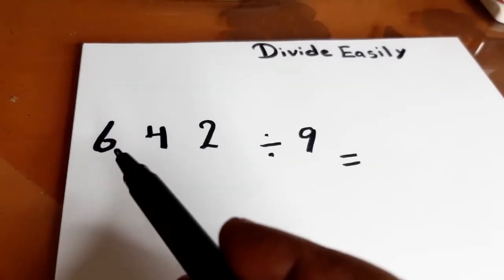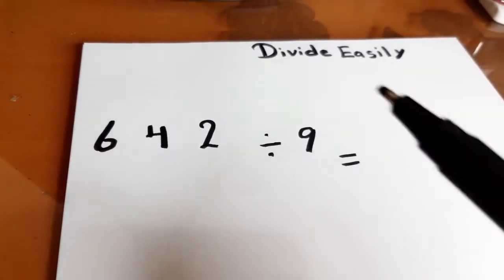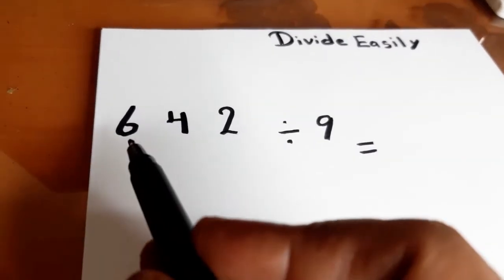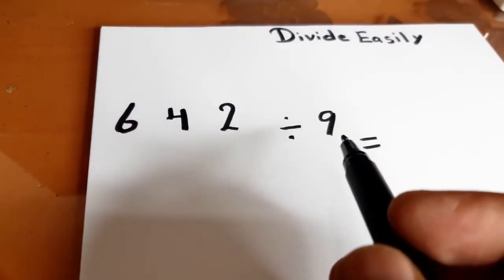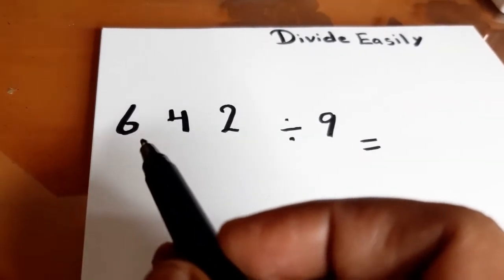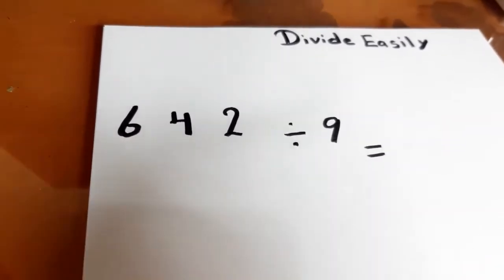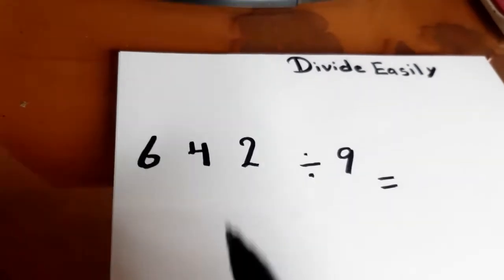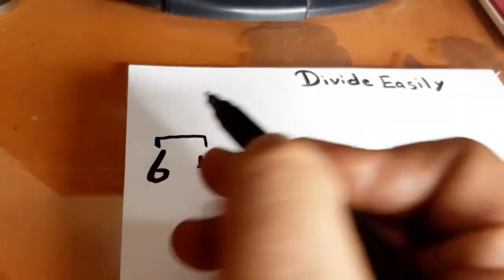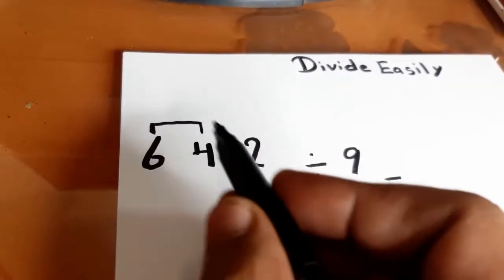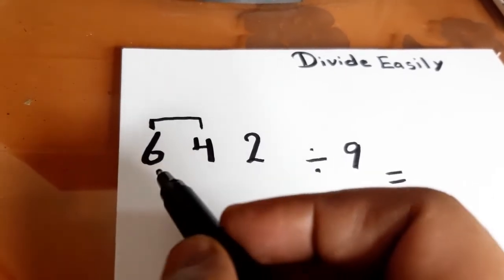We have 642 divided by 9. When we divide 6 by 9, we will find that 6 is indivisible by 9, so we will take this digit. Now we will have a new number, 64.